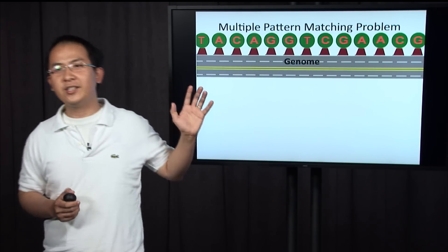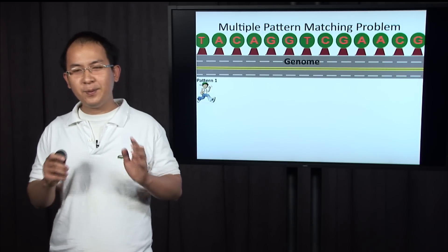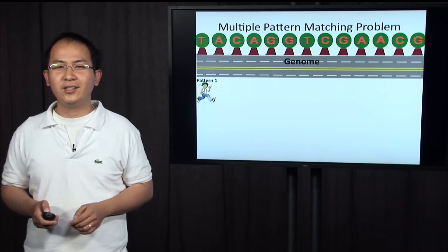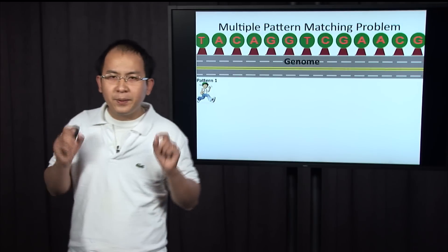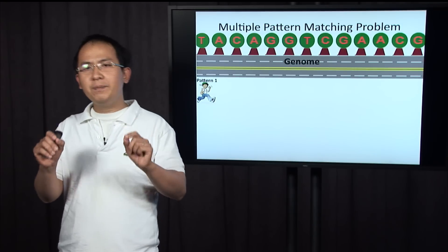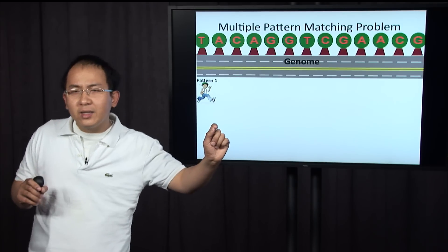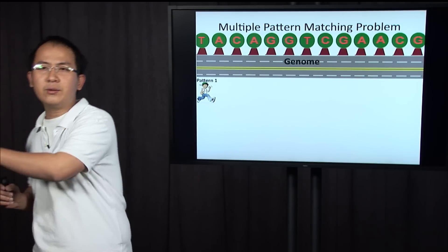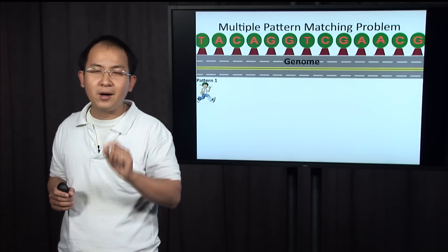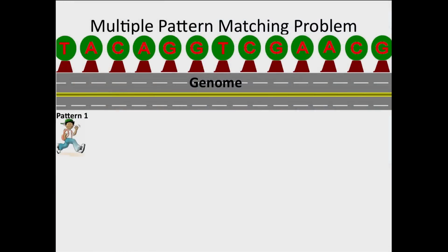Here is the genome as a road, and here is the pattern as a student. Basically, what Phillip does is he asks the student to go along the road and find all the matches that the pattern can match.